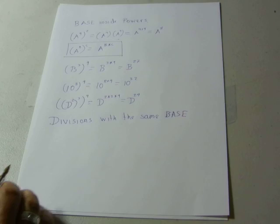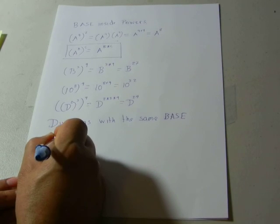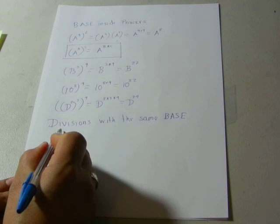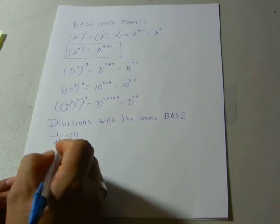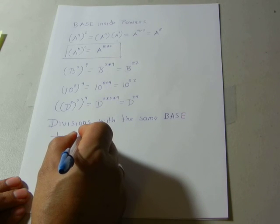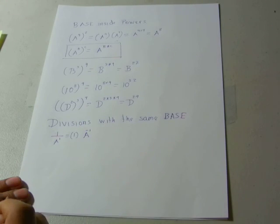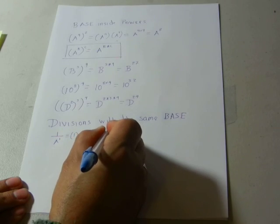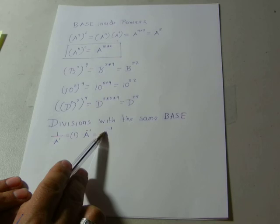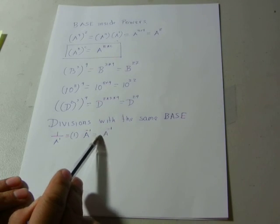Let's identify how divisions work with the base. If we have the base in the denominator, we can express that differently. Instead of using a fraction, we can move the variable from the denominator to the numerator by adding a negative exponent. So 1 over A becomes A to the negative 1.